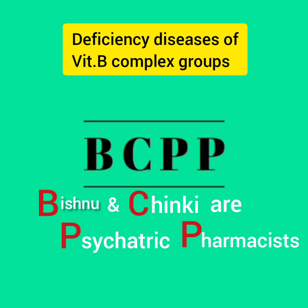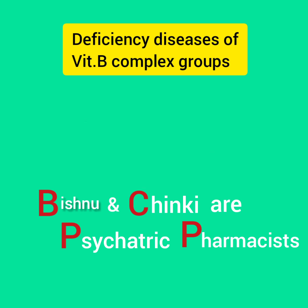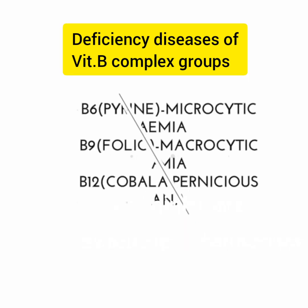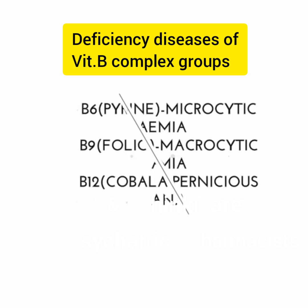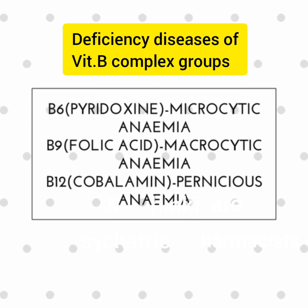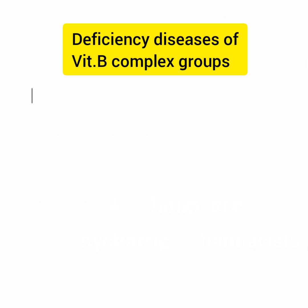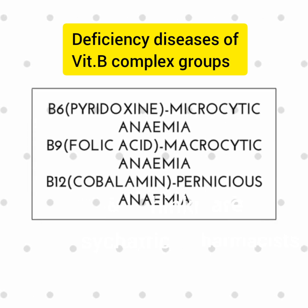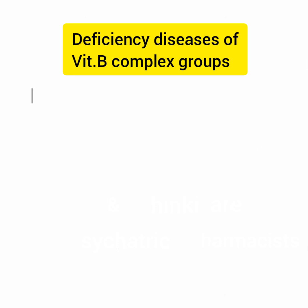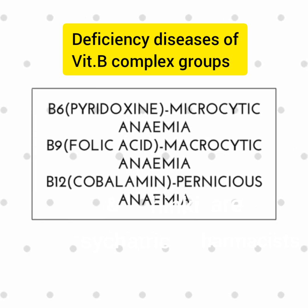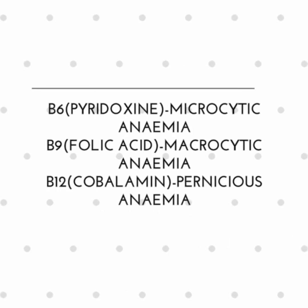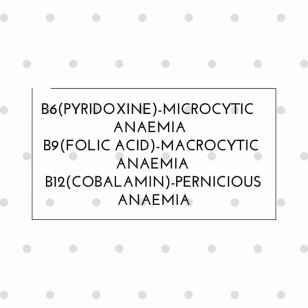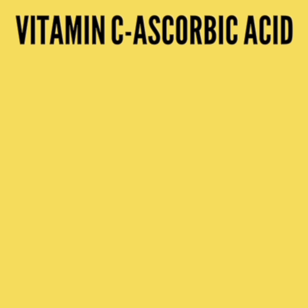For B6, B9, and B12: the deficiency disease of B6 is anemia, and that of B9 is also anemia, but the difference is that deficiency of vitamin B6 causes microcytic anemia, whereas deficiency of vitamin B9 causes macrocytic anemia. Finally, the deficiency disease of vitamin B12 is pernicious anemia.